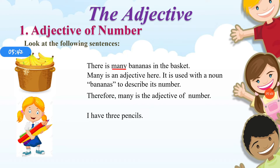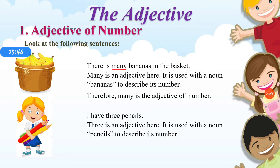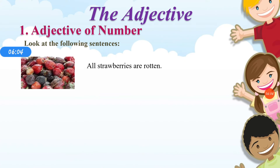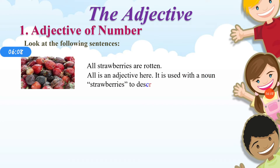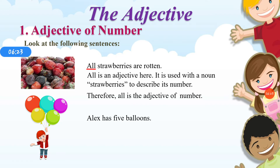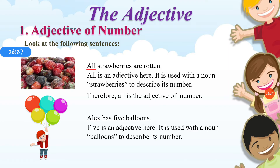I have three pencils. 'Three' is an adjective here. It is used with the noun 'pencils' to describe its number. Therefore, 'three' is the adjective of number. It describes the number of the pencils. All strawberries are rotten. 'All' is an adjective here, used with 'strawberries' to describe its number. Alex has five balloons. 'Five' is an adjective here, used with the noun 'balloons' to describe its number. Therefore, 'five' is the adjective of number.